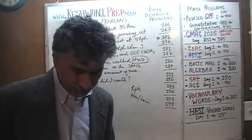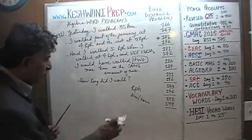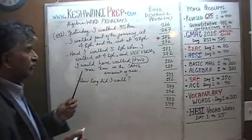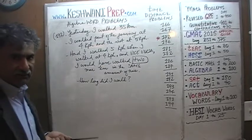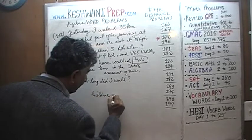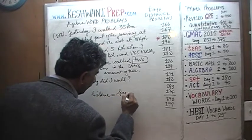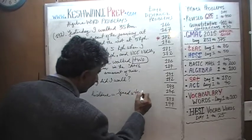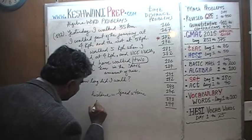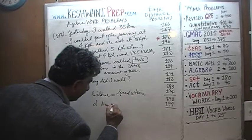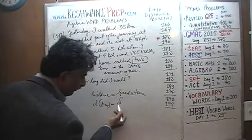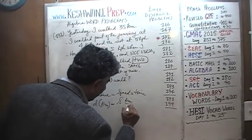Let's set it up and get going. This problem obviously deals with time and distance, and the most basic concept we need to understand is that the distance traveled equals speed times time. We'll use d for distance in kilometers, s for speed in kilometers per hour, and t for time in hours.